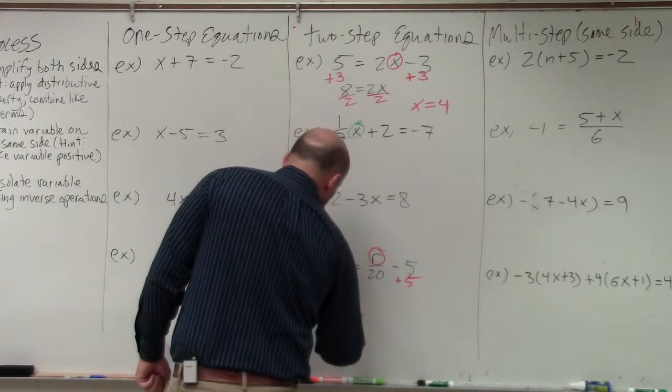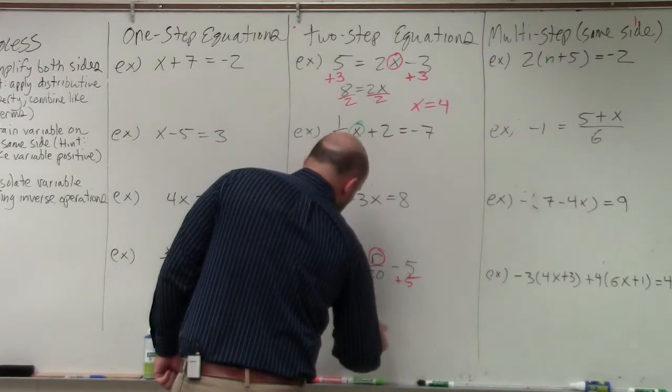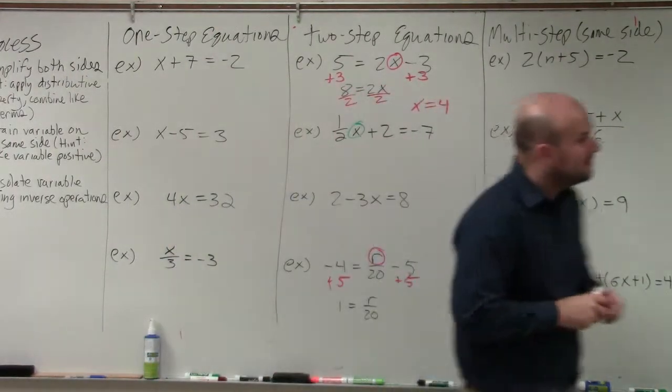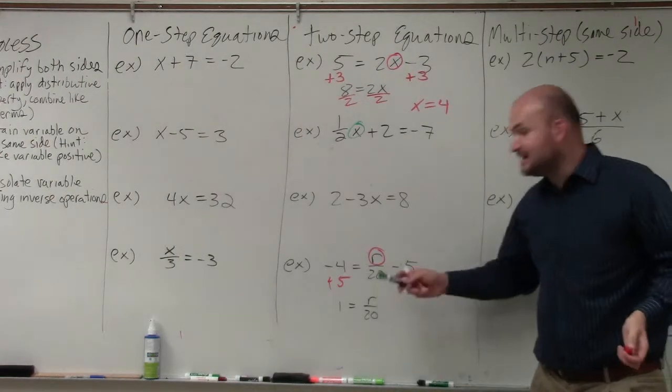So now I basically have 1 equals r over 20. Now, again, what is happening to my variable? My variable is being divided by 20.